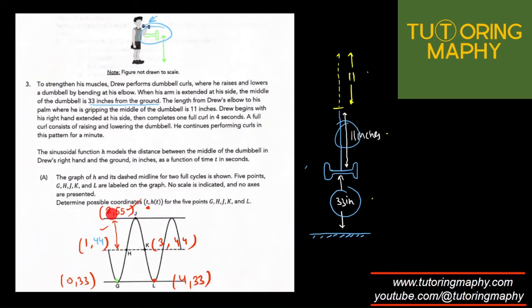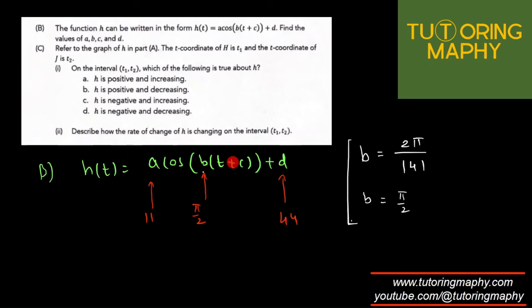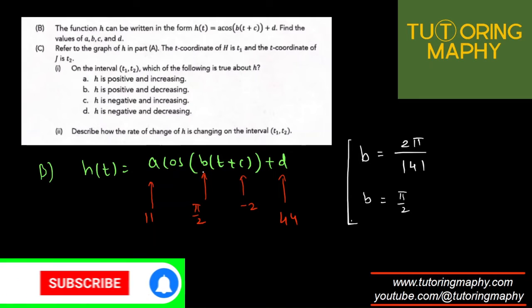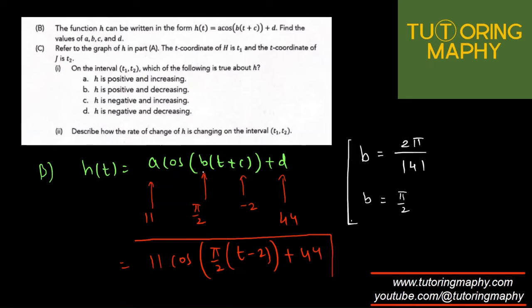The answer is h(t) = 11 cos(π/2(t - 2)) + 44. This is the overall function synthesized for the situation. Be careful about whether it's sine or cosine, because that won't change a, b, or d, but it will change the value of c.